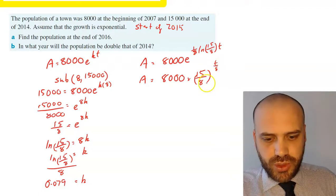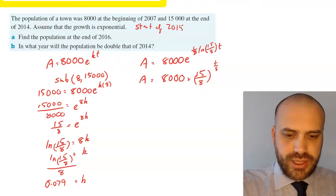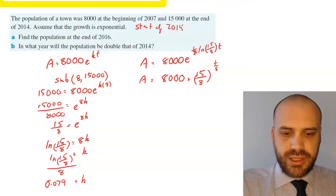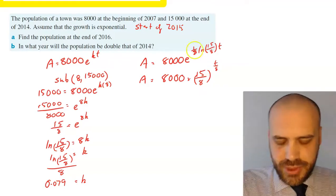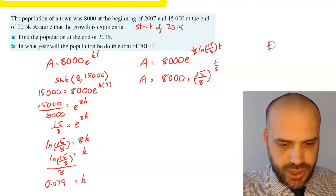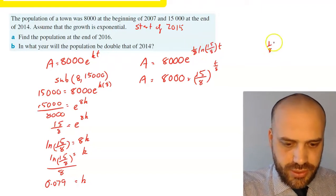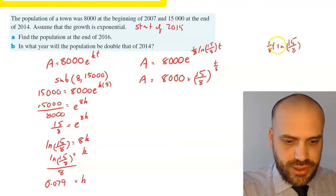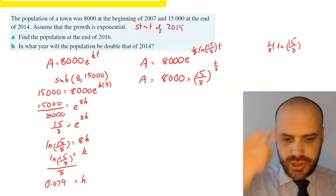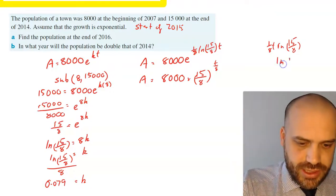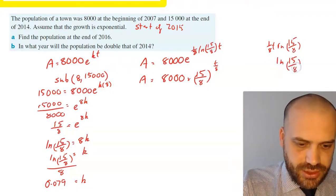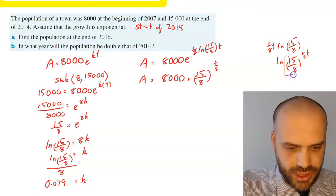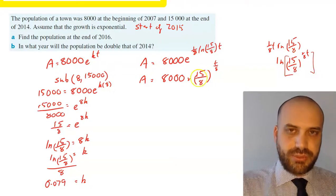Now if you're not sure why we're doing that, you should recall that e to the natural log of something is just going to be the something. Now that to the power of t/8, that's because this (1/8)t·ln(15/8) can be rewritten as ln(15/8) to the power of (1/8)t. And then this bit here is what comes down.